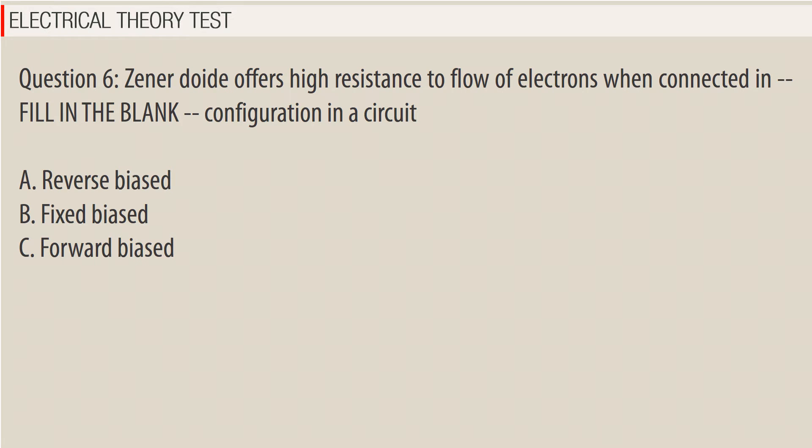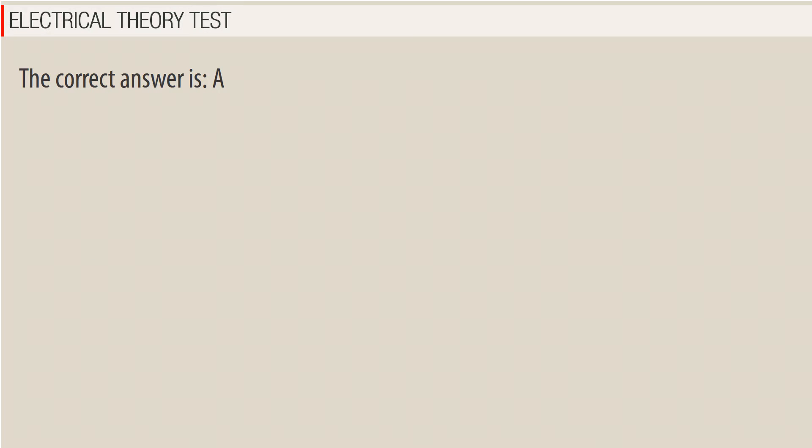Question 6. A Zener diode offers high resistance to flow of electrons when connected in — fill in the blank — configuration in a circuit. A. Reverse biased. B. Fixed biased. C. Forward biased. The correct answer is A — Reverse biased.